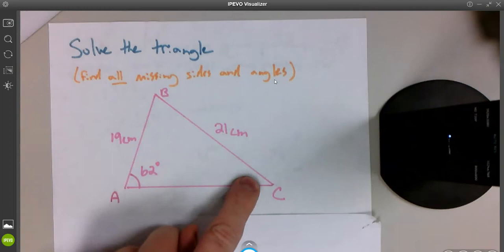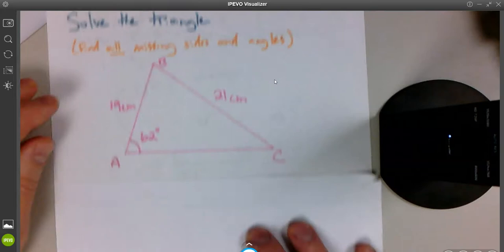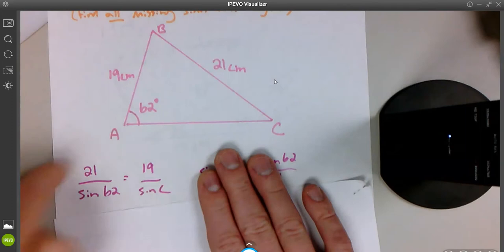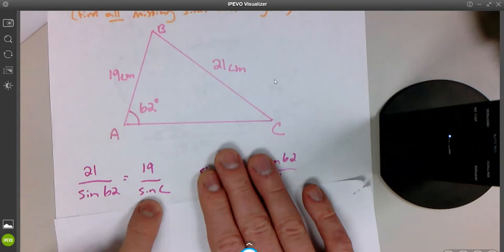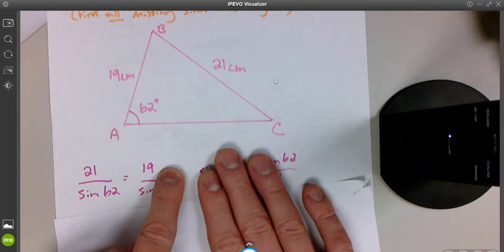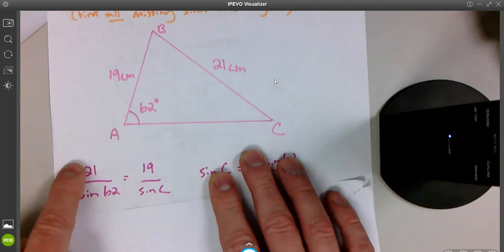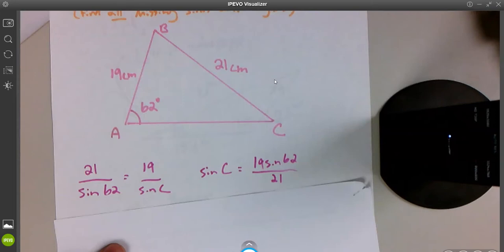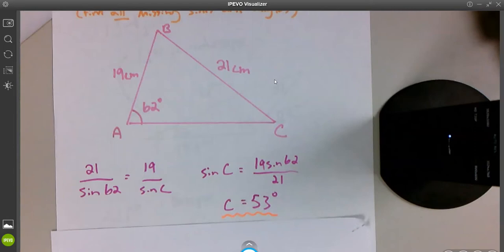This ratio, 21 over the sine of 62, is the same as 19 over the sine of whatever angle this is. So in that first case, we were solving for a side. In this case, we're going to have to solve for an angle. So there's the ratio I just mentioned. 21 over the sine of 62 equals 19 over the sine of capital C. To solve this, you have some choices and we'll talk about it in class. But I'm just going to multiply the sine of C over here. I'm going to multiply the sine of 62 over here. And then I'm going to have 21 times the sine of C. I'll divide the 21 over. So this is getting moved here. This is getting moved down here. And this is getting moved up here. And we're left with 19 sine 62. It's just some algebra. Divided by 21, we'll get about 53 degrees.